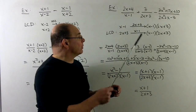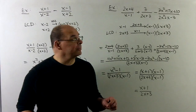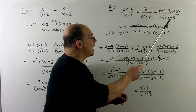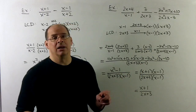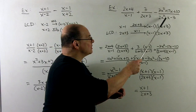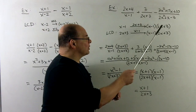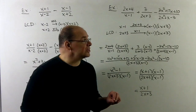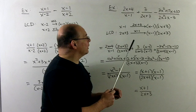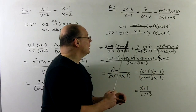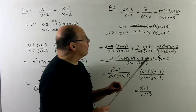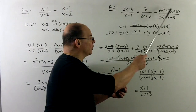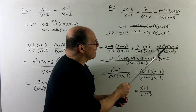Let's try one with three terms — an addition and a subtraction: (2x+4) over (x-1) plus 3 over (2x+3) minus (3x² + 17x + 10) over (2x² + x - 3). Factoring 2x² + x - 3 gives (2x+3)(x-1), which is already our LCD. The minus sign in front of the third fraction distributes to every term in its numerator, changing it to minus 3x² minus 17x minus 10.